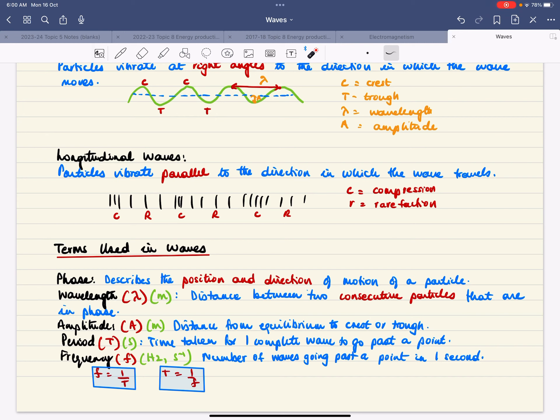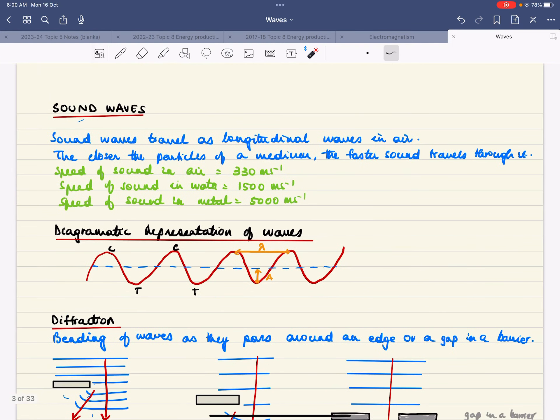Period is the time taken for one complete wave to pass a point. And frequency is the number of waves going past a point in one second. And this is the connection between period and frequency.